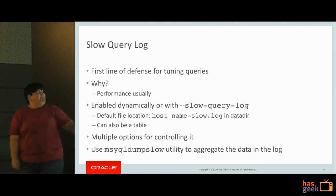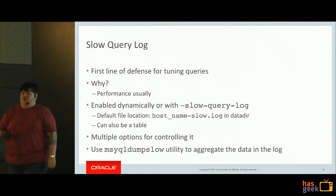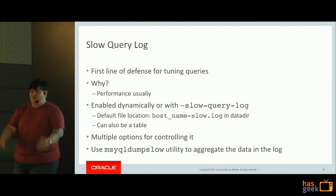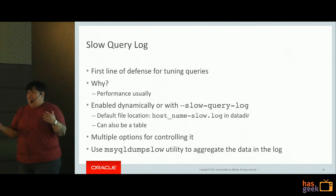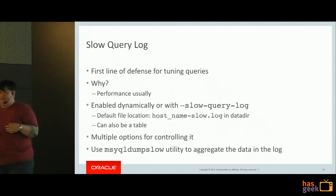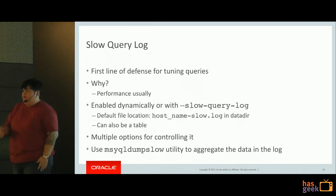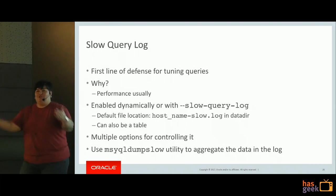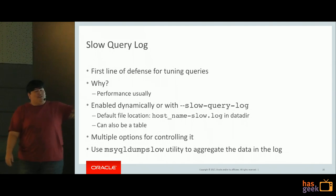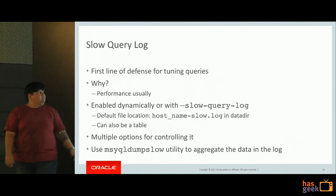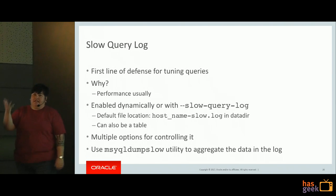Why would you turn on the slow query log? It's usually done for performance issues. As a DBA you want to be proactive, not reactive. It's good to occasionally - especially after you refactor your code or apply new functionality to your application - watch your query logs to see if anything has changed and if you need to tune anything. You can turn on your slow query log dynamically or use it on the command line when you start your server. The default location is within the data directory.